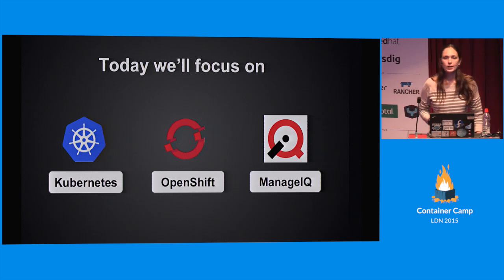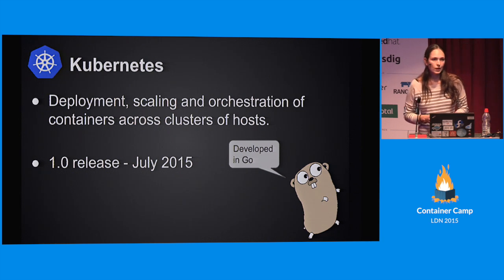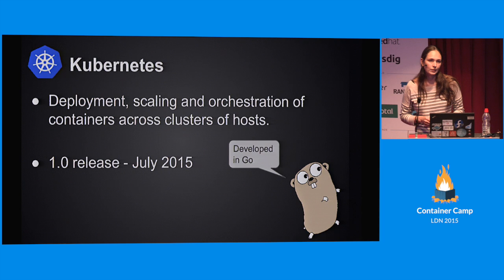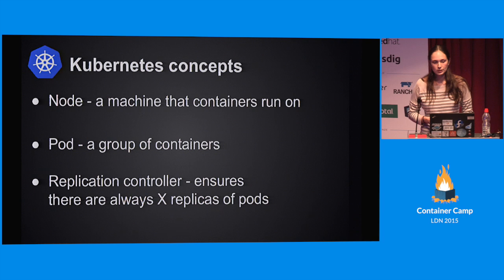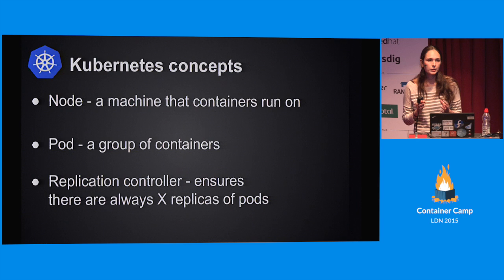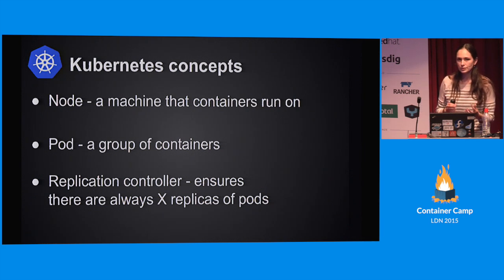Let's start with Kubernetes. Kubernetes is a relatively young project - its first release was announced two months ago. What it does is provide us with the ability to deploy, scale, and orchestrate containers across a cluster of a lot of hosts. These are the core concepts of Kubernetes: a node is a machine that the containers are running on. A pod is a group of containers, and it promises us that whatever containers are part of it are going to be deployed together on the same machine. It's actually the smallest unit with which the user can communicate to Kubernetes about containers.